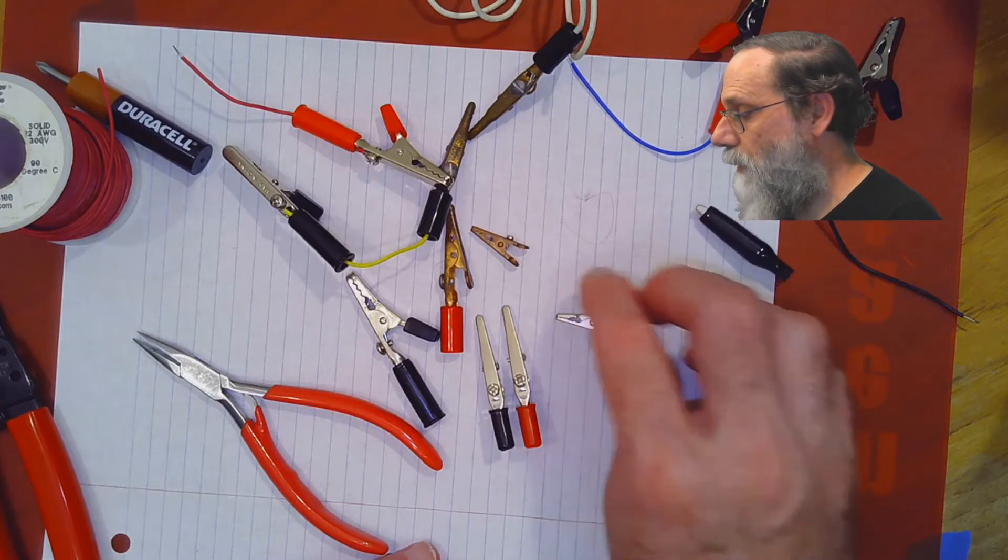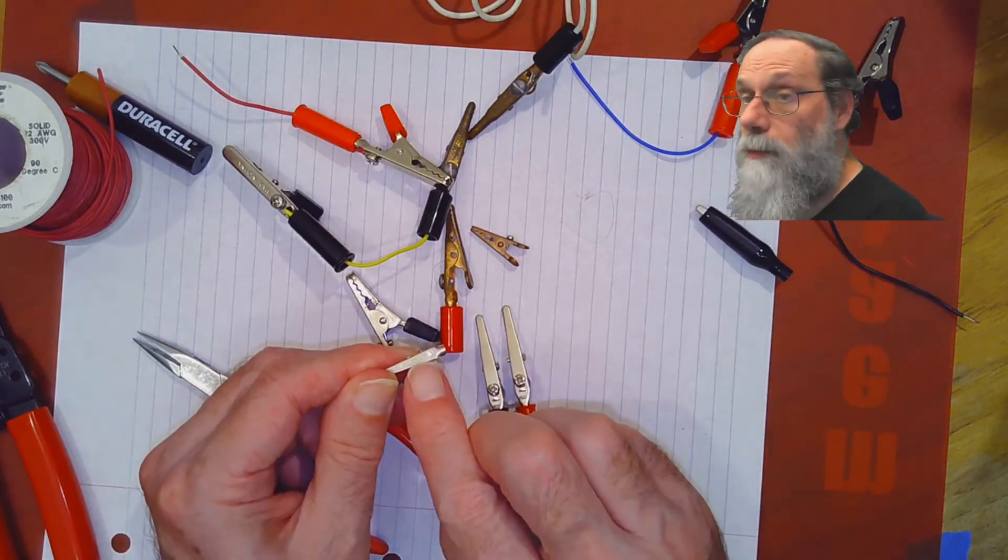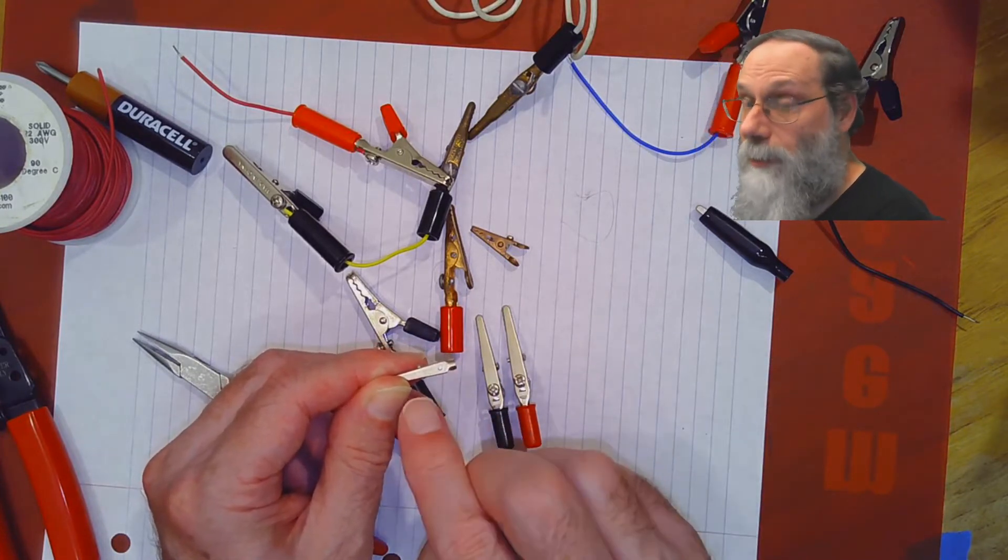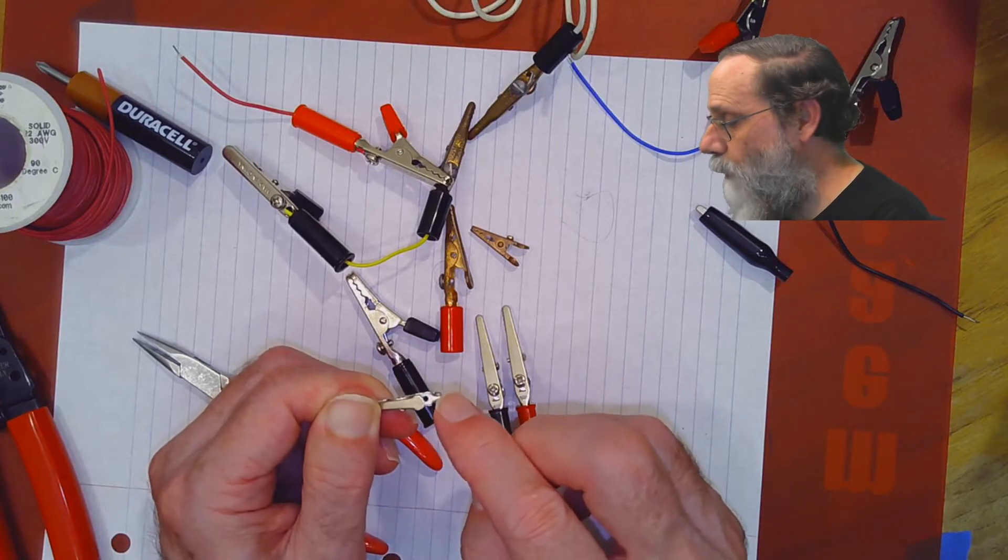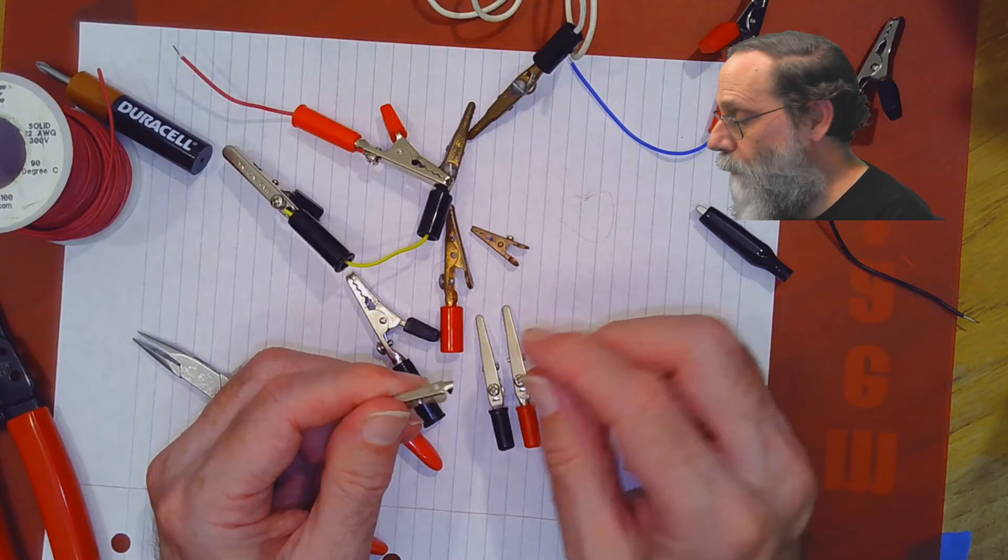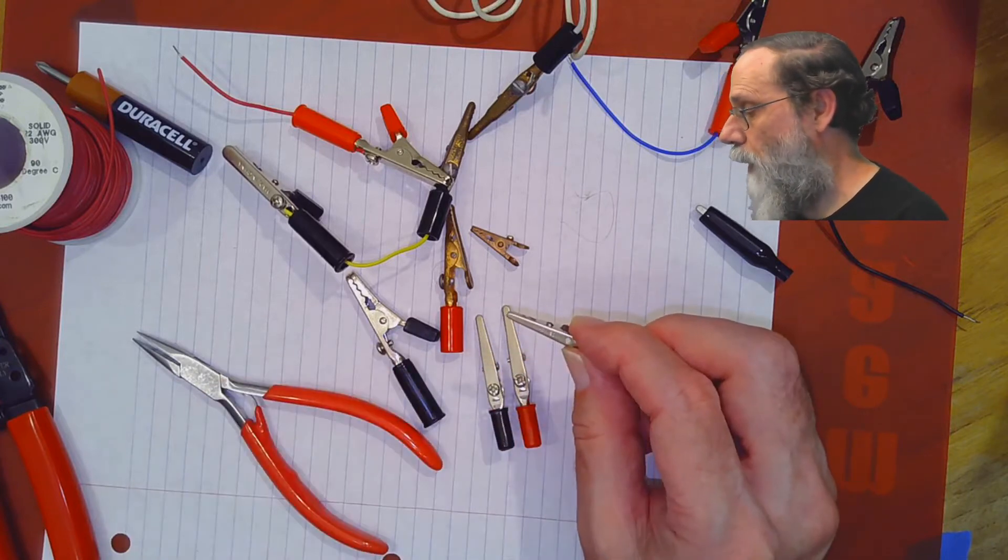Some alligator clips are totally different style where there's no screw, just a hole here. The wire threads through that hole, and then you solder it in place, and these little prongs here on the back are for crimping down over the insulation so you've got some strain relief on the wire.